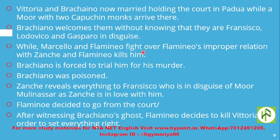Meanwhile, Marcello and Flamineo fight over Flamineo's improper relationship with Zanche the servant, and Flamineo kills Marcello. Brachiano, as Duke, is forced to put Flamineo on trial for the murder. Then Brachiano is poisoned by the Moor — Francisco and the other conspirators — and meets the same fate he inflicted upon his own wife Isabella.